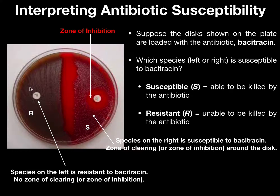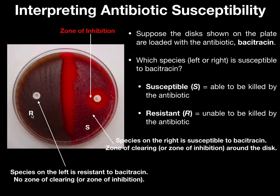The bacterial species on the left side is resistant to bacitracin. The reason it's resistant is because around this disc, there's no clearing — no zone of inhibition. There's just clean growth right around the disc. Therefore, the species on the left is resistant, meaning it's unable to be killed by the antibiotic. For resistant, we give it the letter R. When you record the results of either a bacitracin or Optochin test, you're going to use either R or S — S for susceptible (zone of inhibition present) and R for resistant.